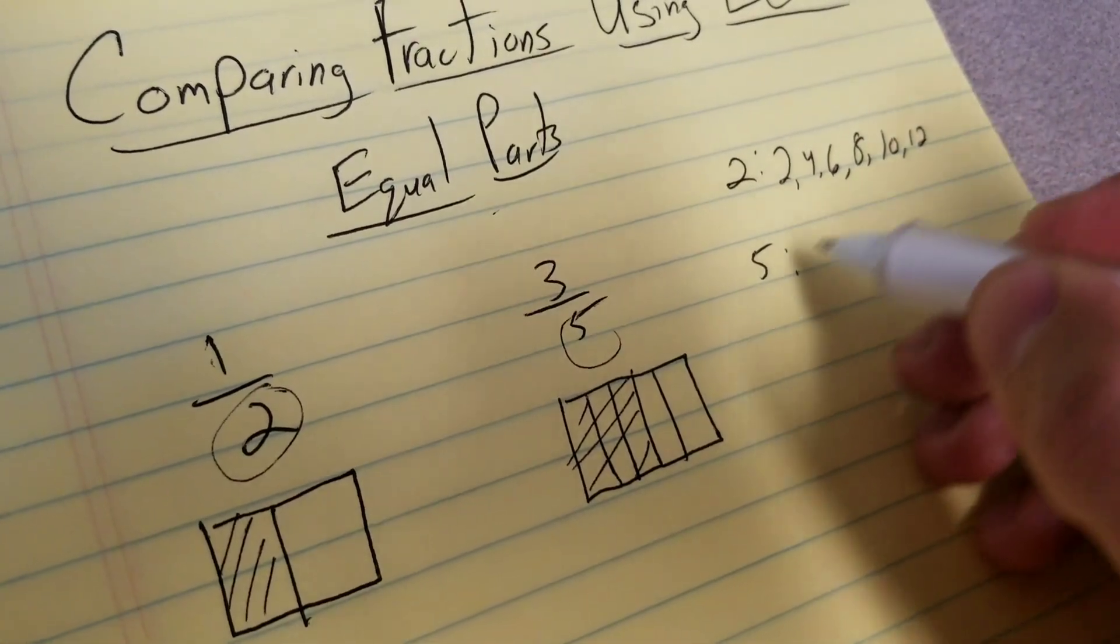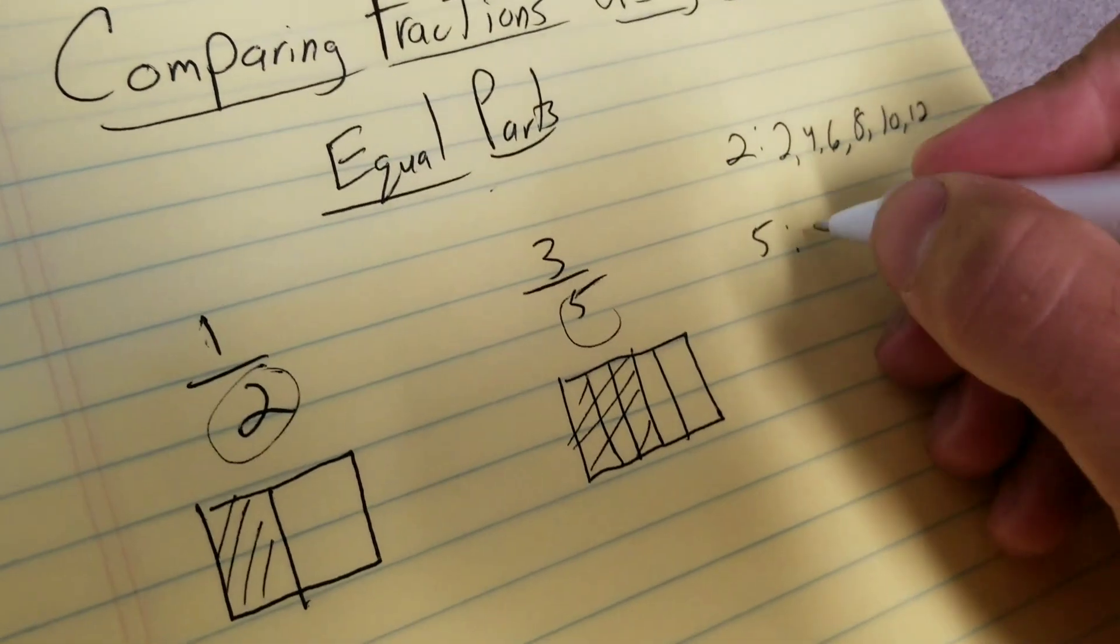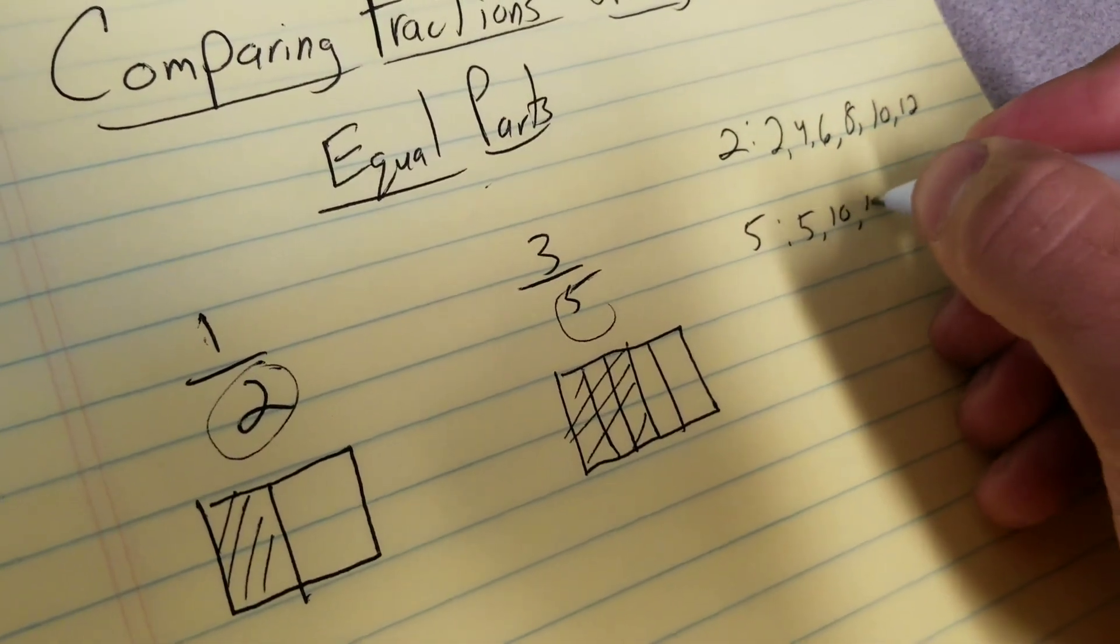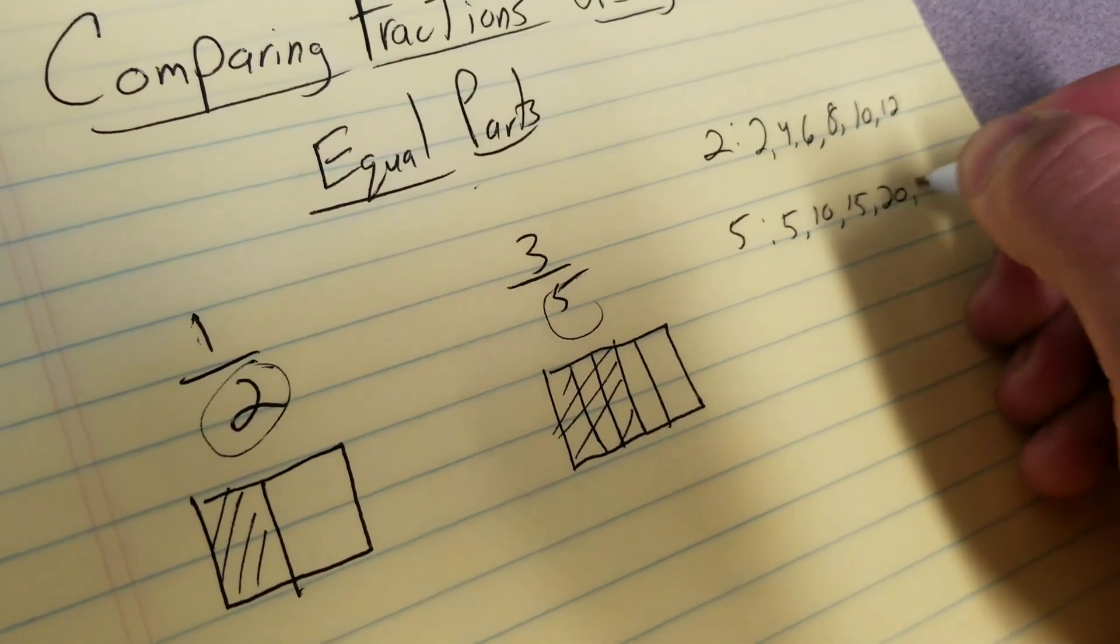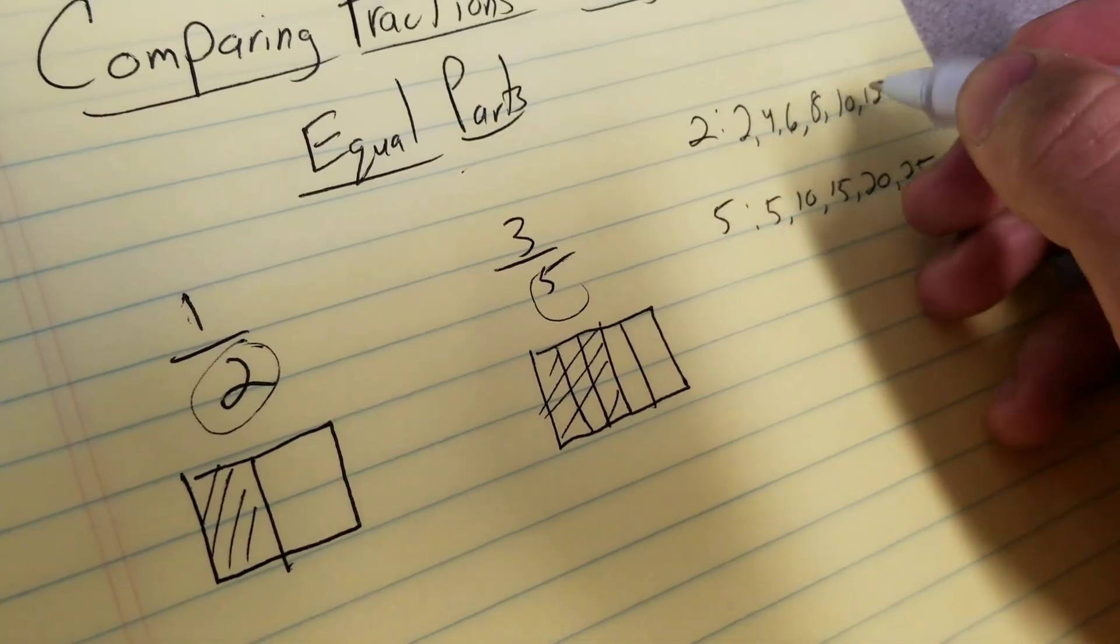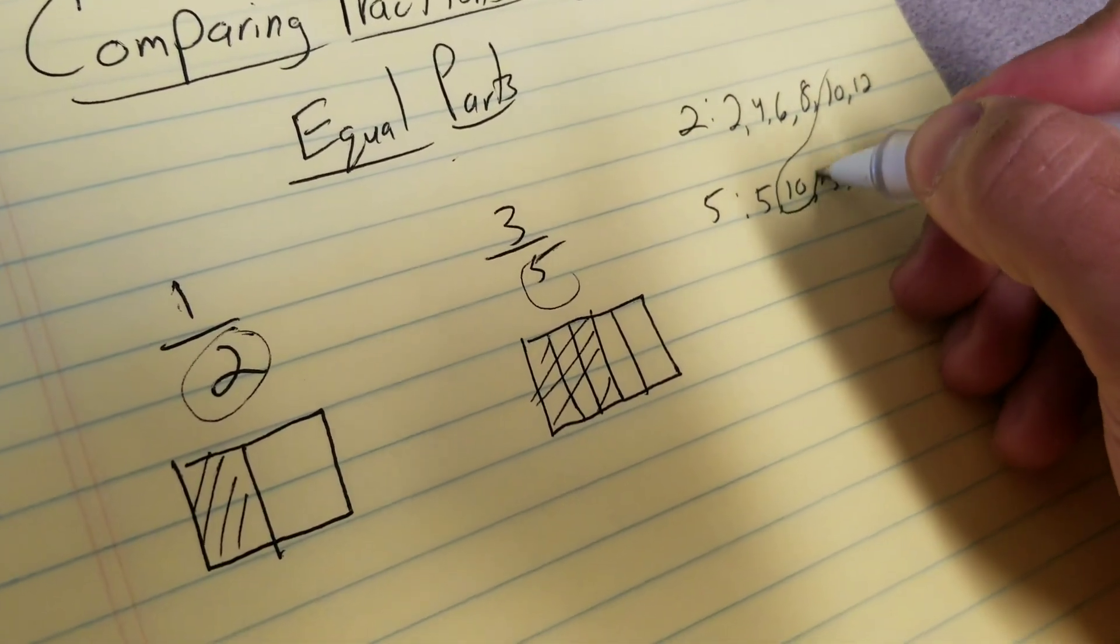5, 10, 15, 20, 25. I look and see if I have any common numbers, and I do—my least common multiple is 10.